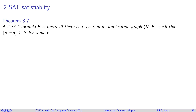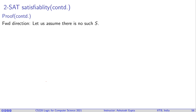The formula F is satisfiable if and only if there is no strongly connected component containing both a variable P and its negation ¬P. If P and ¬P are in the same SCC, then making one true forces the other to be true — contradiction, so F is unsatisfiable. If no such SCC exists, we can construct a model.